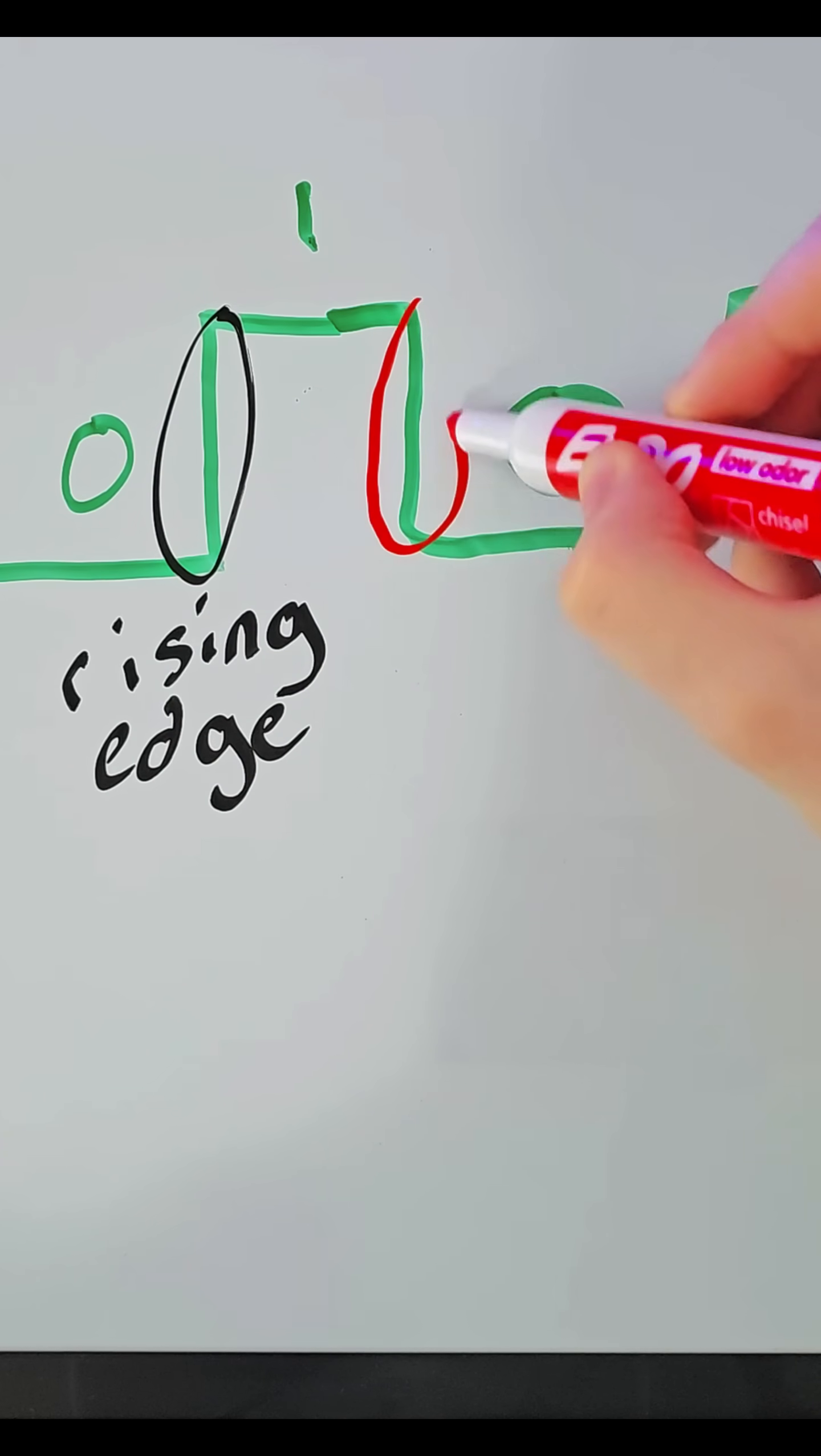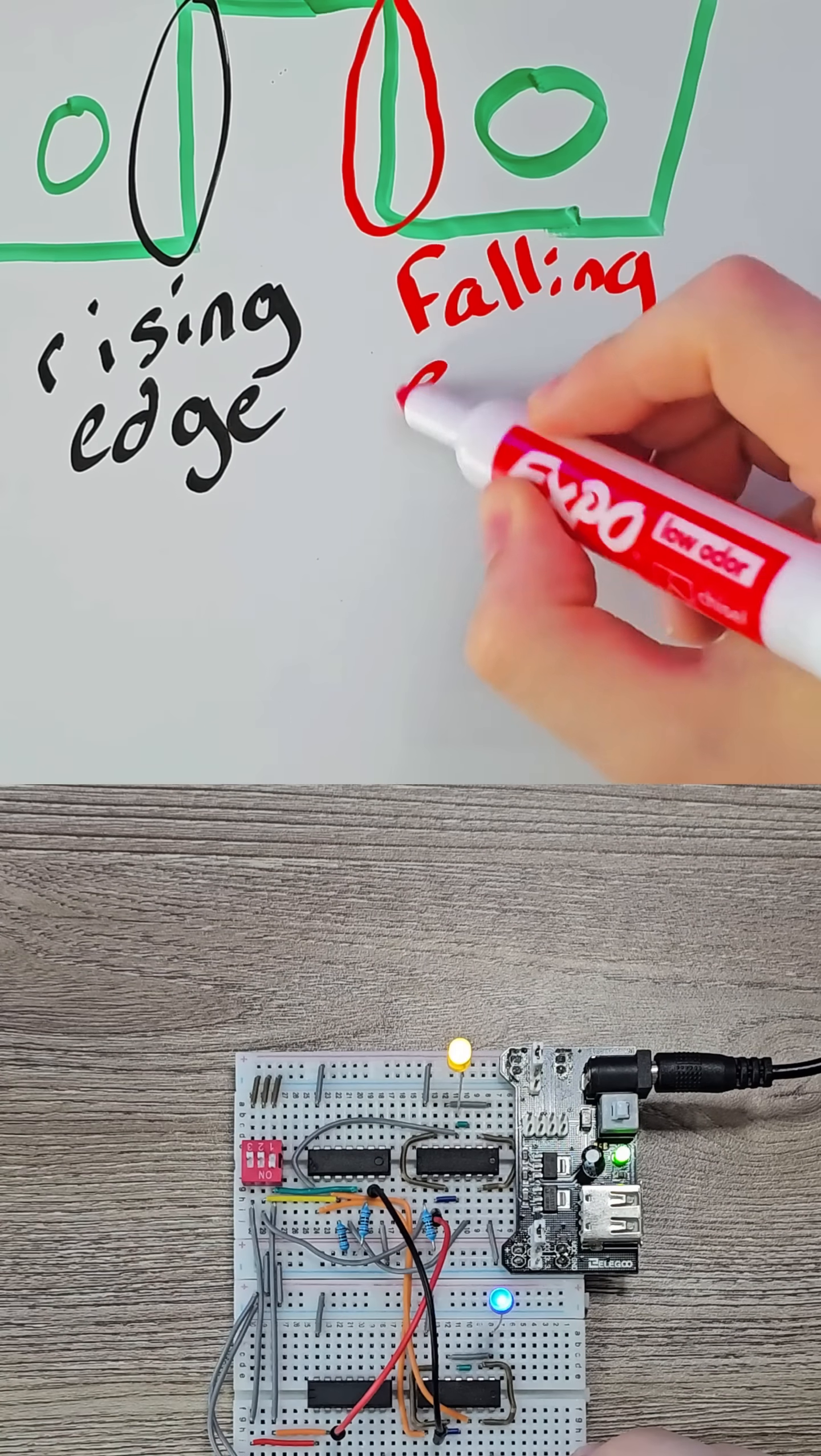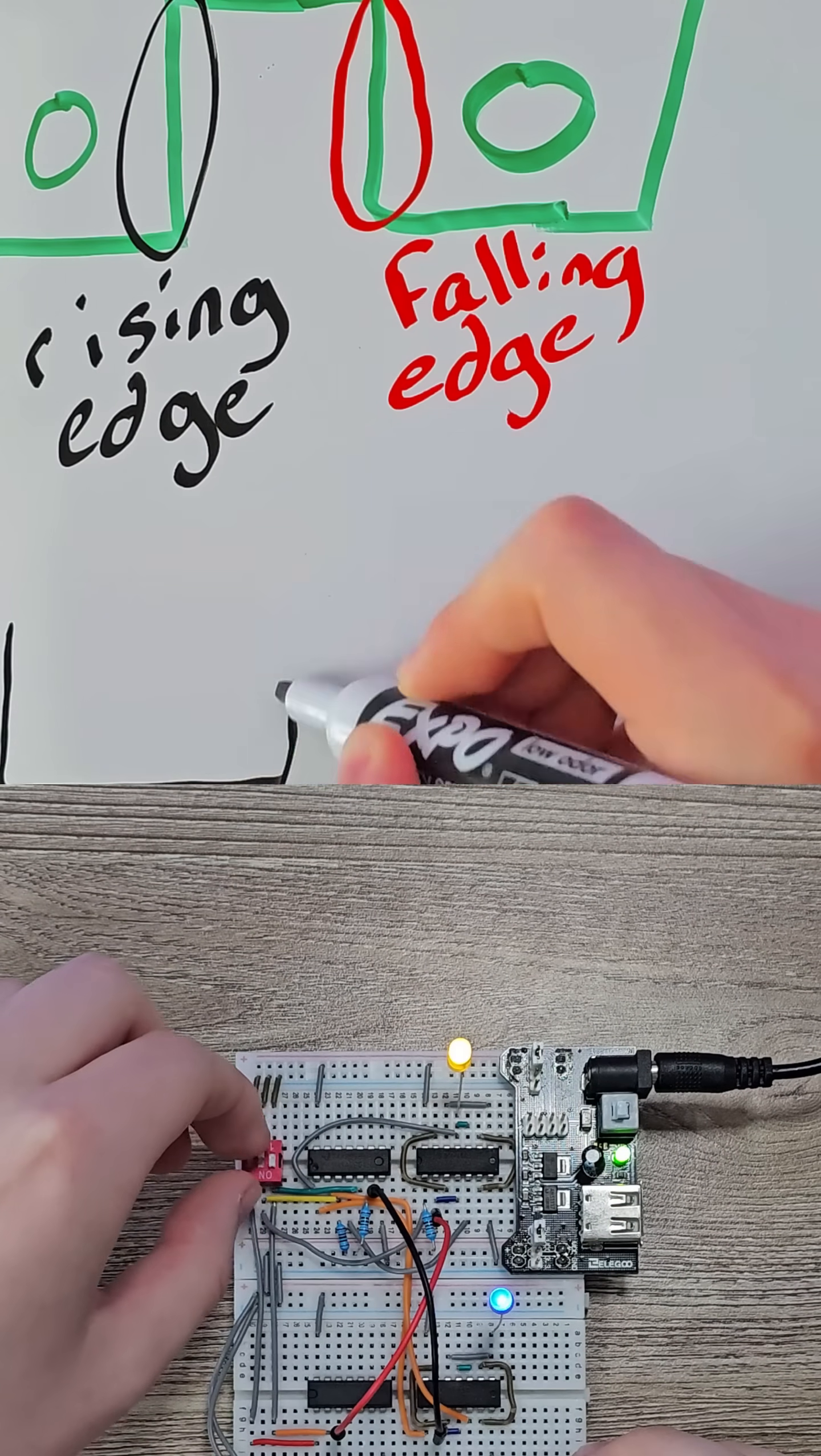This is known as the falling edge. The data will then be sent to the other D-latch. This D-latch is what actually stores the number.